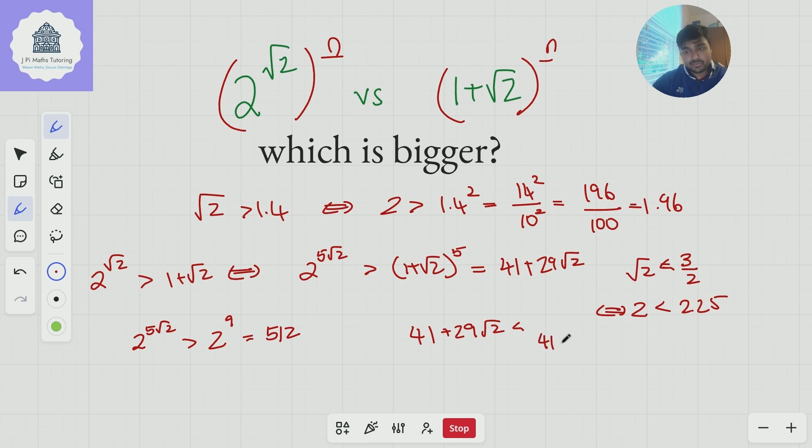So this thing here is going to be less than 41 plus 29 times 3 over 2, which is less than 41 plus or is equal to 41 plus 44.5. And that is very clearly equal to 85.5, a basic addition I'm struggling with.